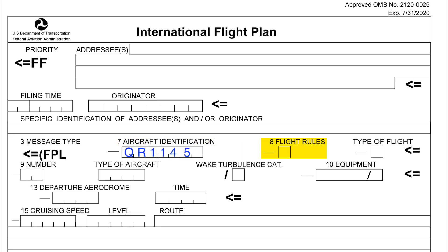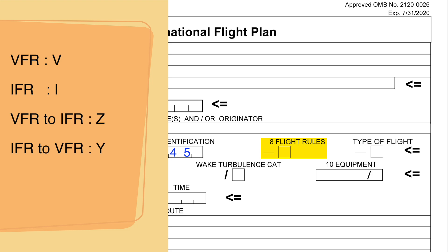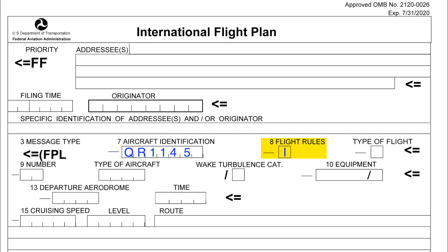Next, in item 8, flight rules — this means whether the flight will be under VFR or IFR, or initially VFR then switch to IFR, or vice versa. So if the flight will be a simple VFR cross country, you insert the letter V. If the flight is an IFR flight, you insert the letter I. Now, sometimes we depart from uncontrolled airports where no radar service is provided, so we depart under VFR, then at some point join controlled airspace and carry on under IFR. In this case, we put in the letter Z, which signifies that flight rules will change from VFR to IFR.